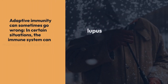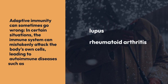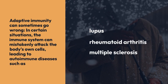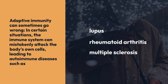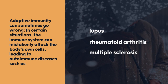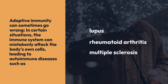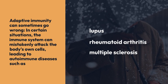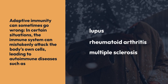Adaptive immunity can sometimes go wrong. In certain situations, the immune system can mistakenly attack the body's own cells, leading to autoimmune diseases such as lupus, rheumatoid arthritis, and multiple sclerosis.